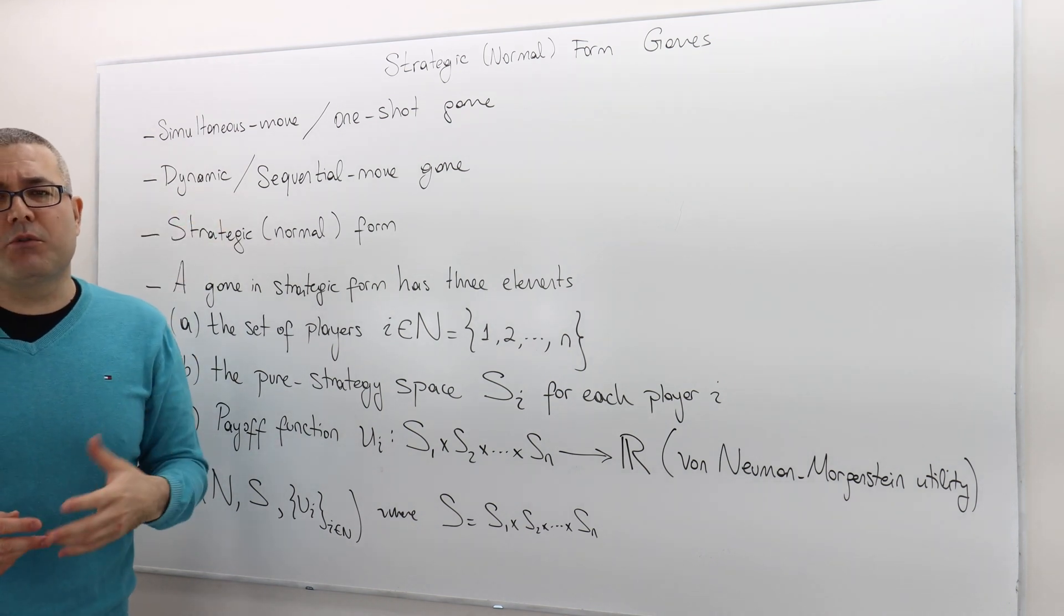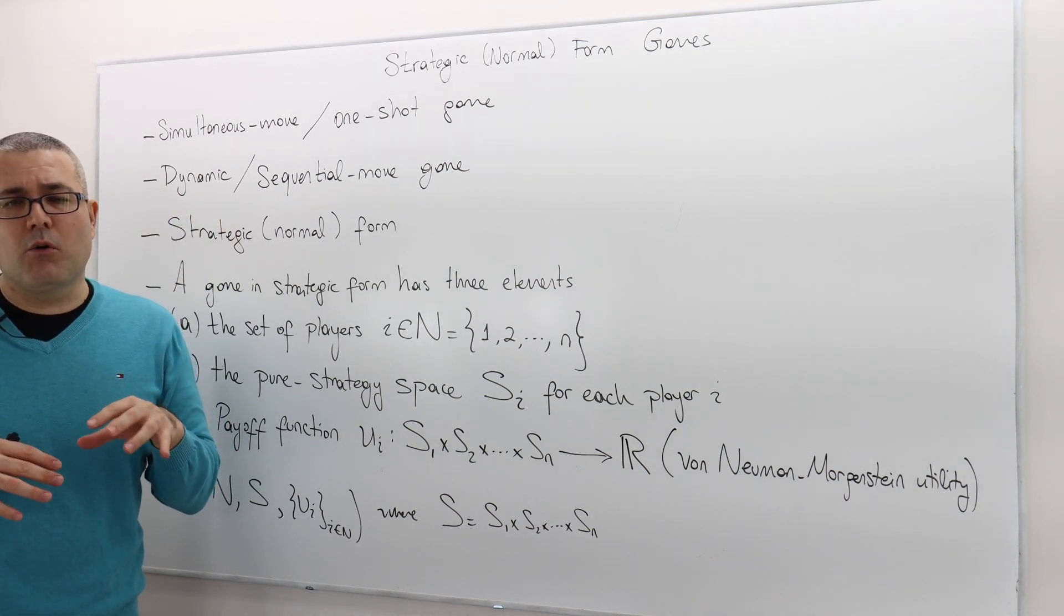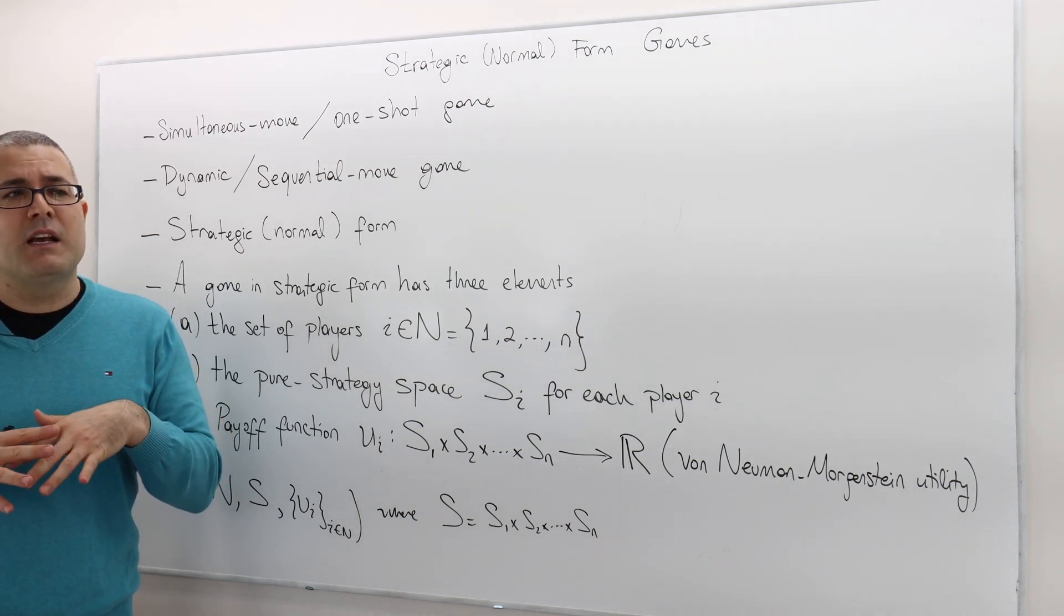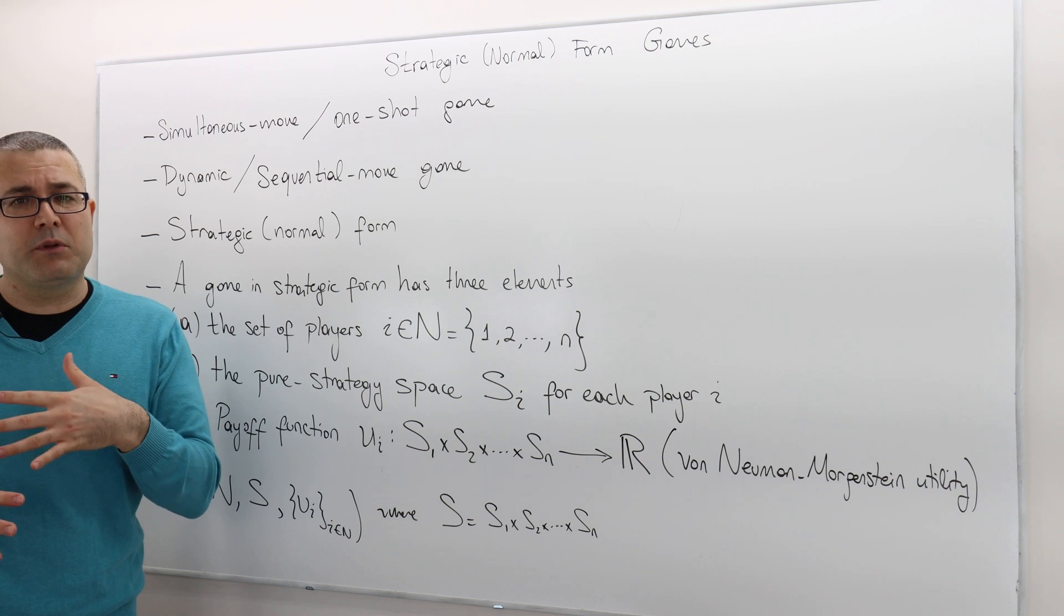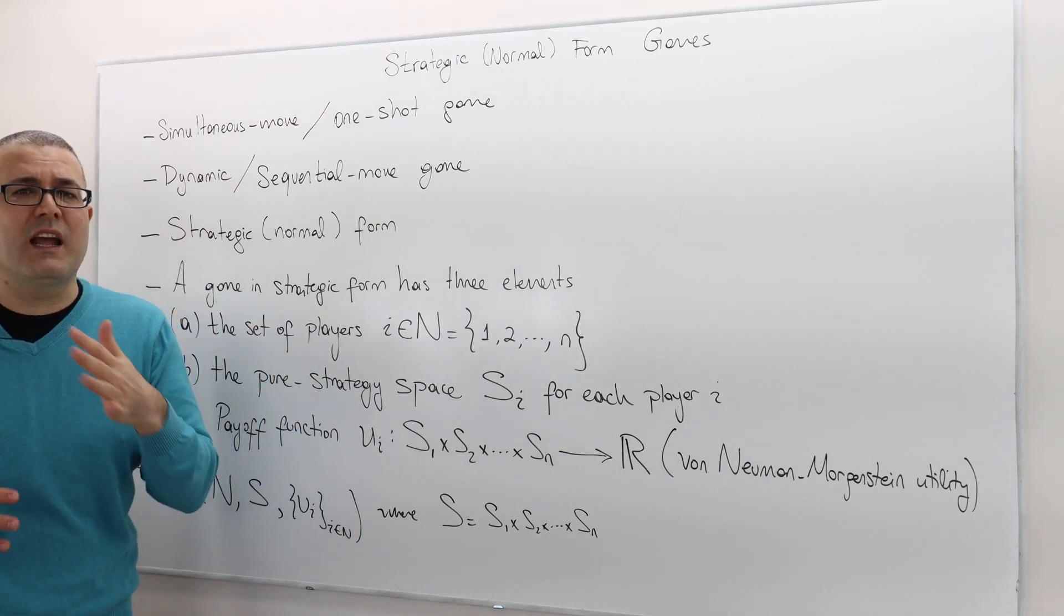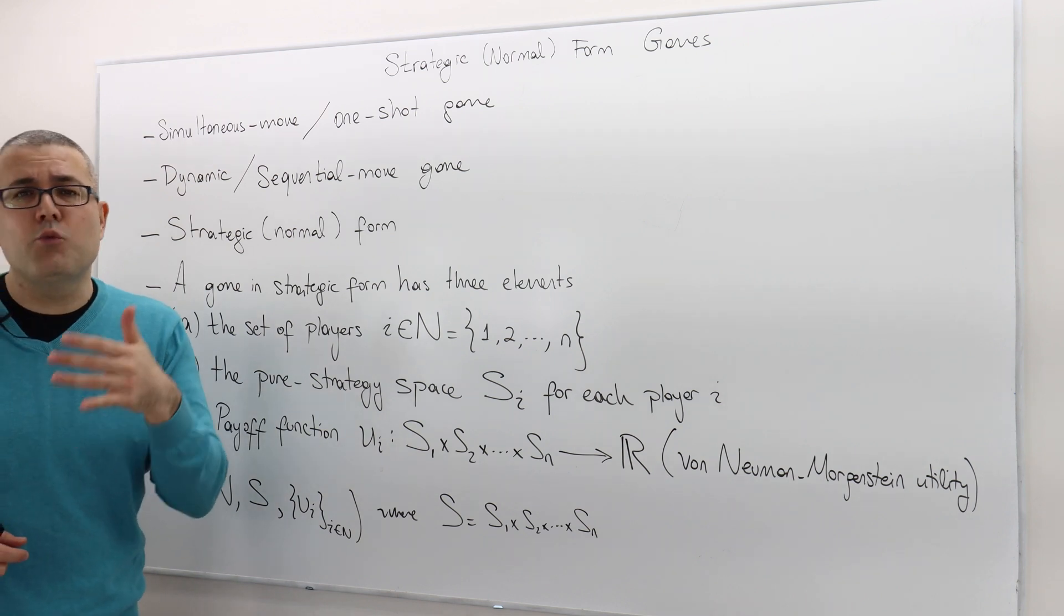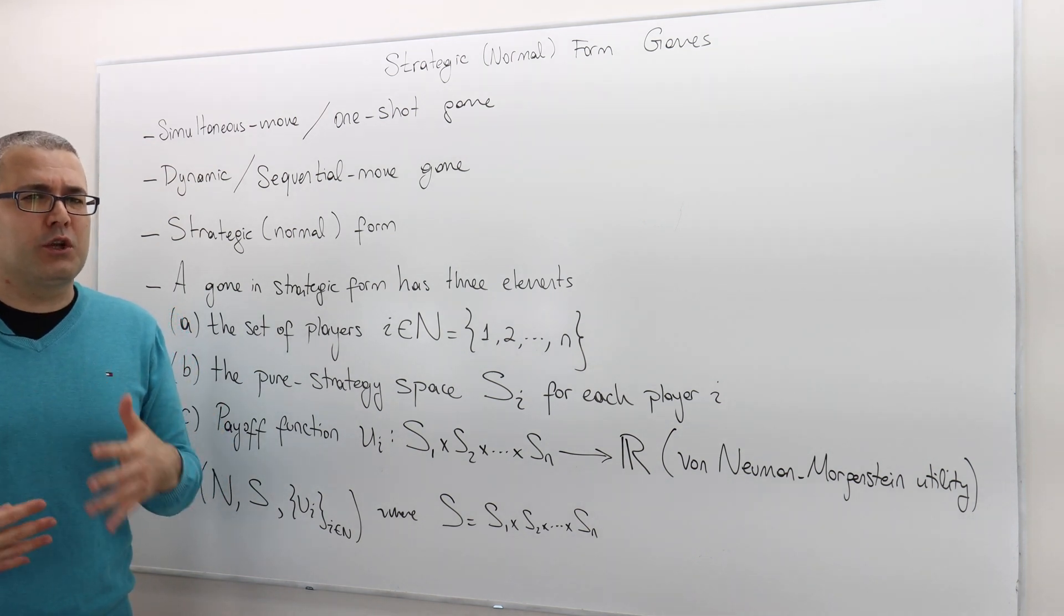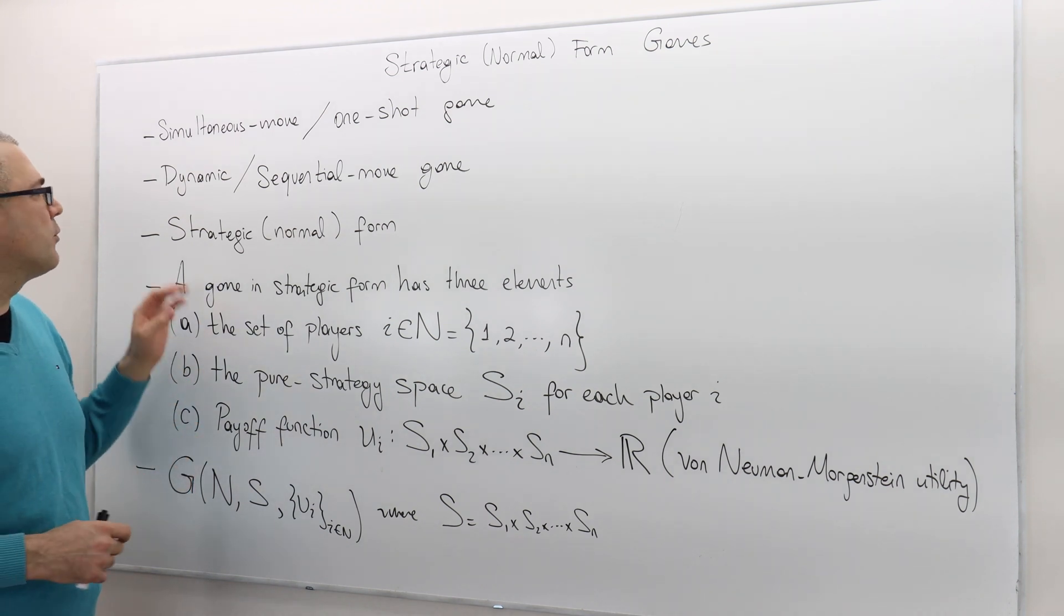The second is the dynamic or sequential move game. The games are called dynamic or sequential move if the description of the game specifies the order of the player. So we know which player moves first, which player moves second. By the way, when I say we know, it's not just we, the designers, but also the players also know the order of the play. So that's important.